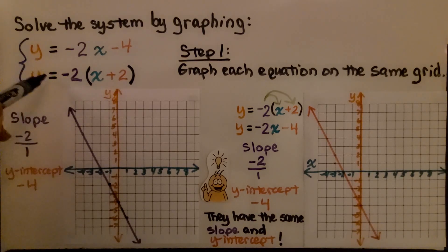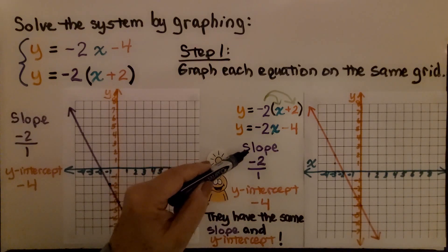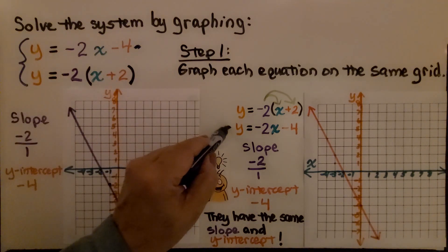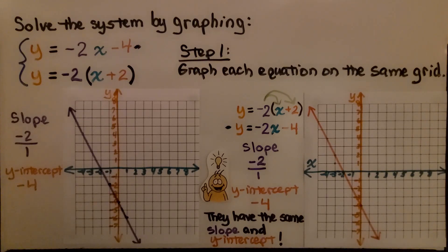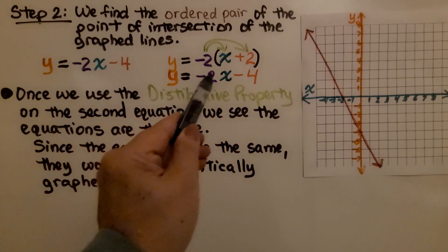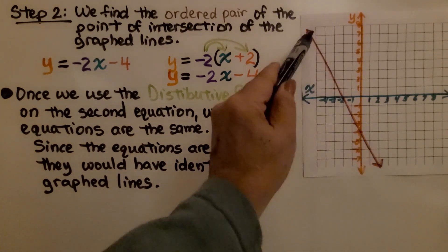For the second equation, we first apply the distributive property, distributing negative 2 to both x and positive 2, giving us y = -2x - 4. The slope is again negative 2 over 1 and the y-intercept is negative 4 — the same as the first equation. Since the equations are identical, they would have identically graphed lines; our red line would be on top of the purple line.